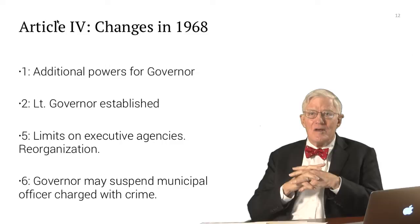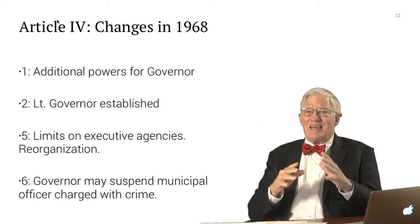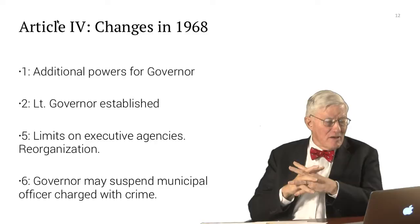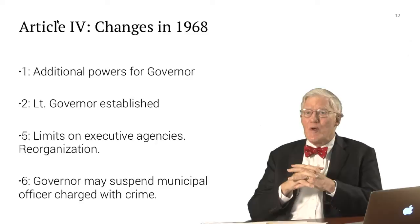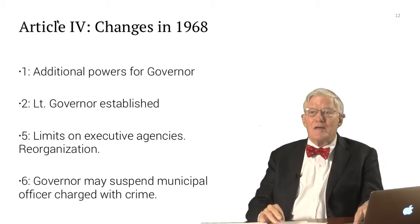Article 4 had additional powers to the governor. The lieutenant governor was reestablished — remember the lieutenant governor had been established in 1868 and had been eliminated in the 1885 Constitution when the convention added large numbers of statewide elected officers called the cabinet. The 1968 revision puts a limit on the number of executive agencies and requires that they be reorganized into no more than 25 executive agencies, and allows the suspension of municipal officials charged with crime.